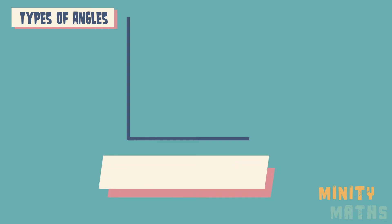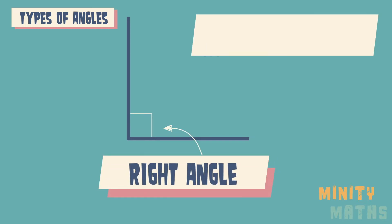A right angle measures exactly 90 degrees and the angle is indicated by a square rather than a curve.